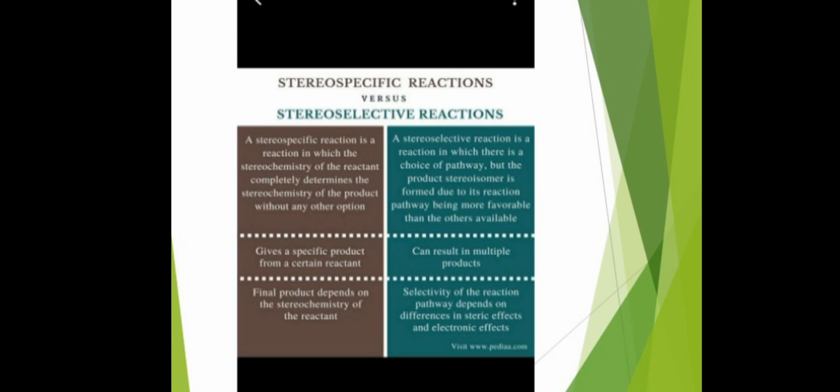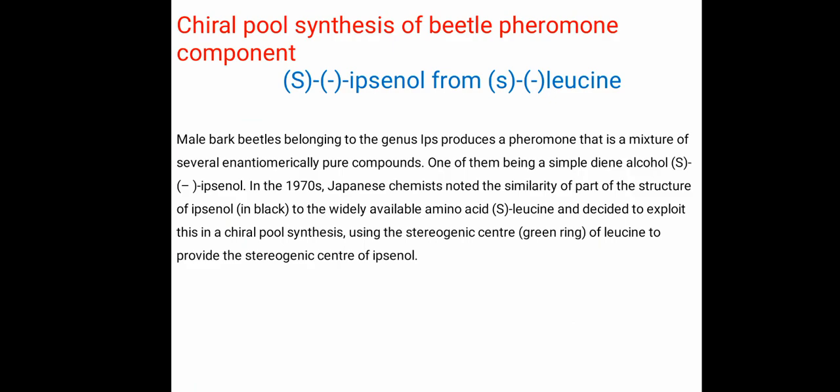If there is a choice of pathway and the main product is the more favorable one, multiple products can result. The selectivity of the reaction pathway depends on differences in steric effects and electronic effects. Now let us see one example of chiral pool synthesis: the synthesis of the beetle pheromone component S-ipsonol from S-leucine.